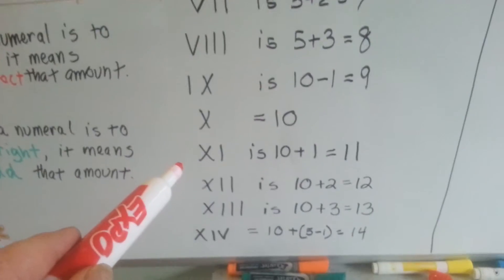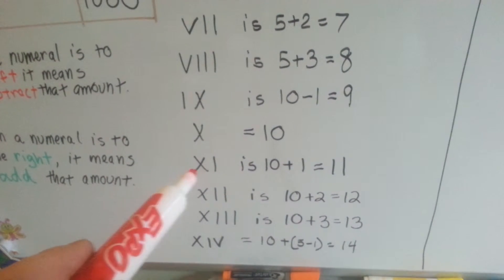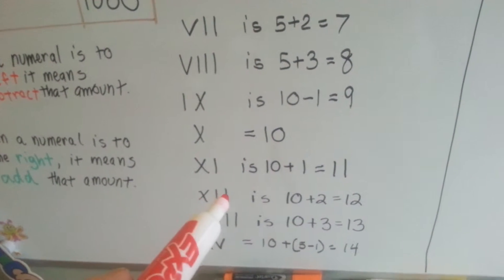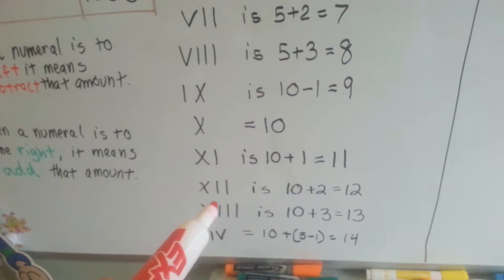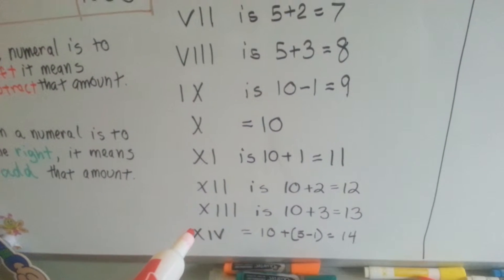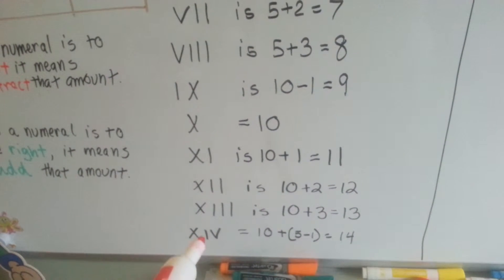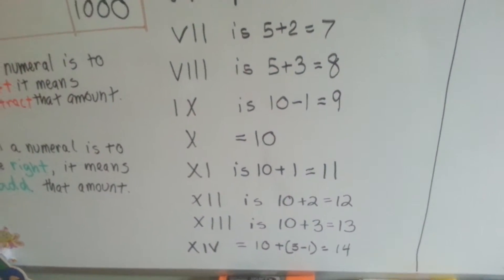Then we've got our X is a 10. Our X plus 1 is 10 plus 1. 10 plus 2 for 12. 10 plus 3 for 13. And then 14 is an X for 10, and then an I from 5 for 14.